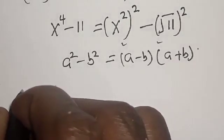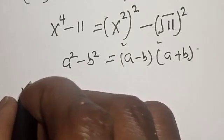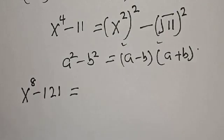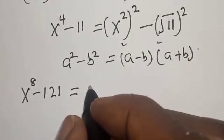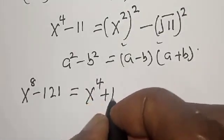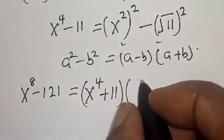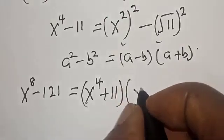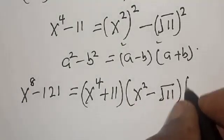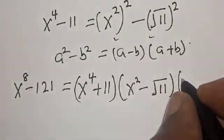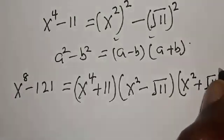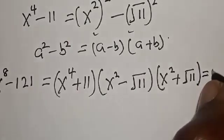So x to the power 8 minus 121 equals x to the power 4 plus 11, multiplied by x squared minus the square root of 11, multiplied by x squared plus the square root of 11, and this is equal to zero.